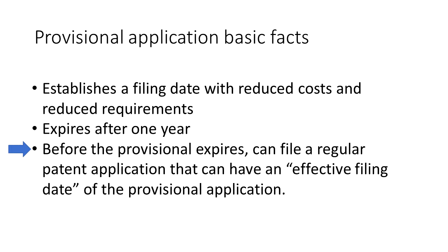But if a regular patent application is filed and referenced to that provisional patent application, and that regular application eventually does get published — which typically happens within 18 months — then the provisional application will be available to the public. So let's see a situation where you might want to get access to someone else's provisional patent application and how you go about obtaining it.